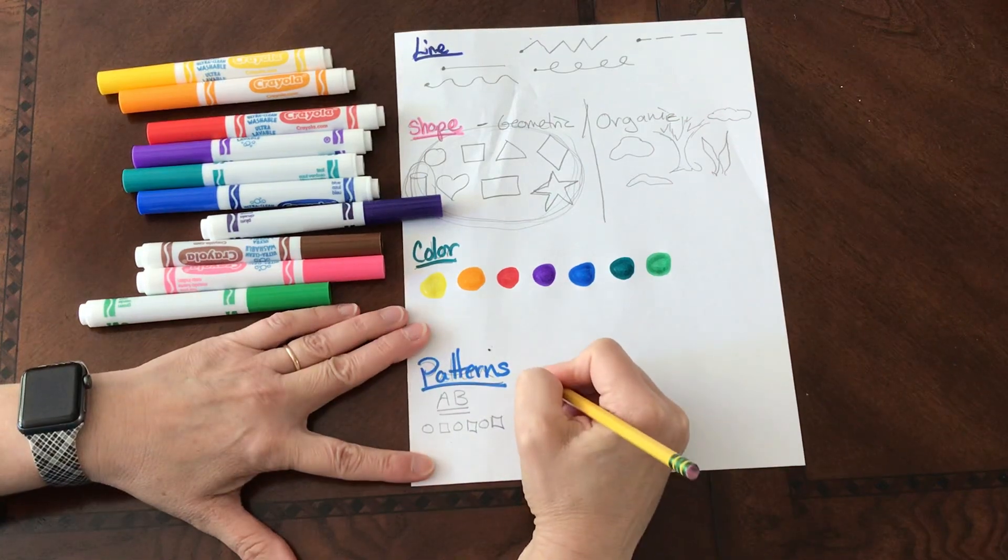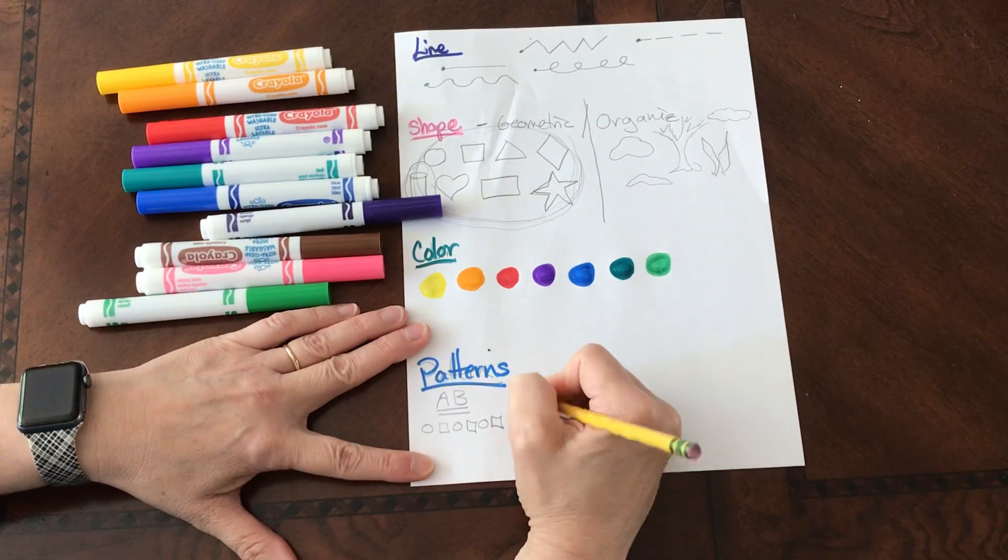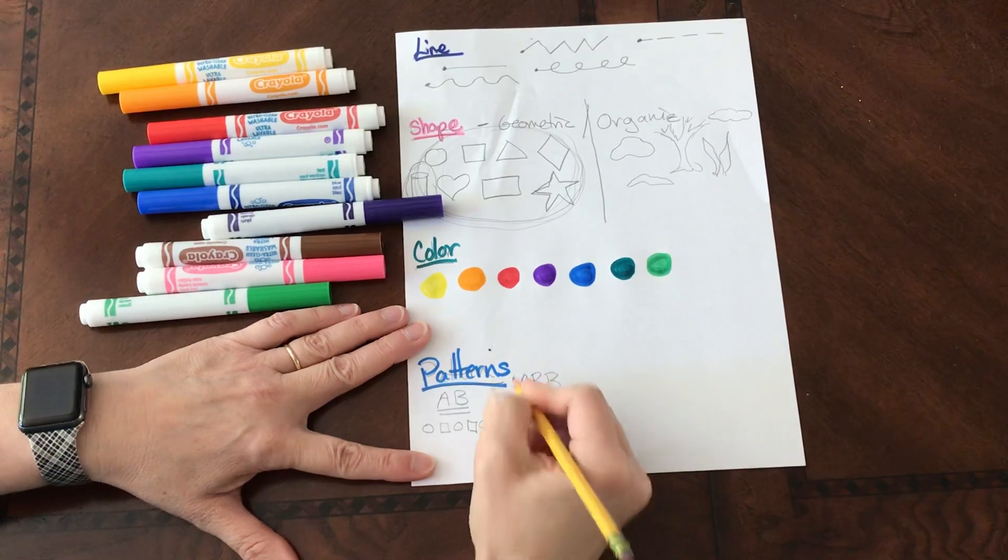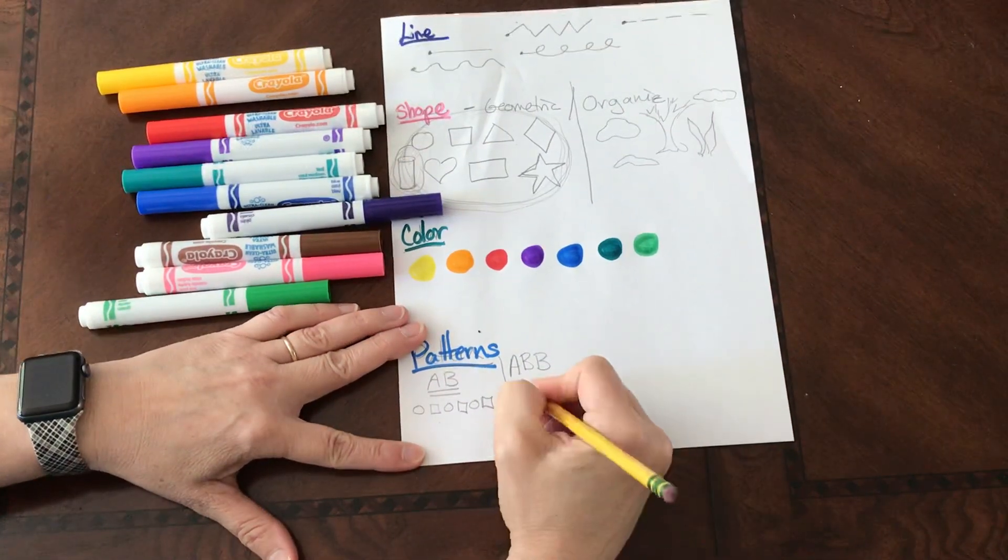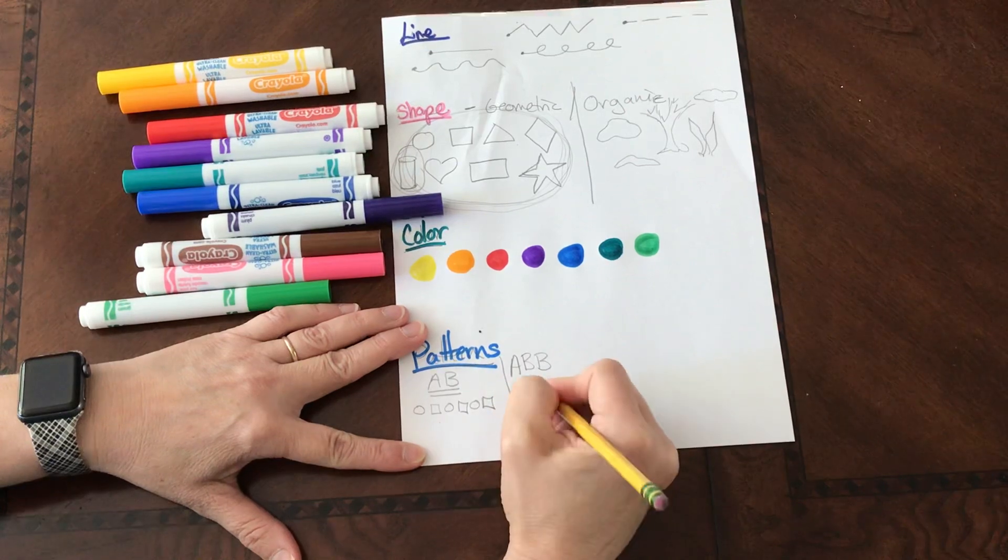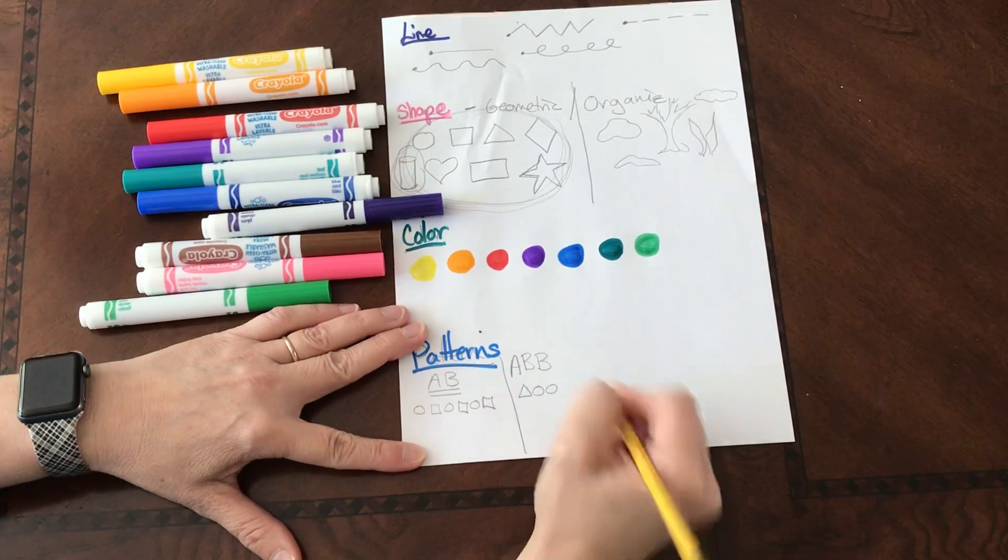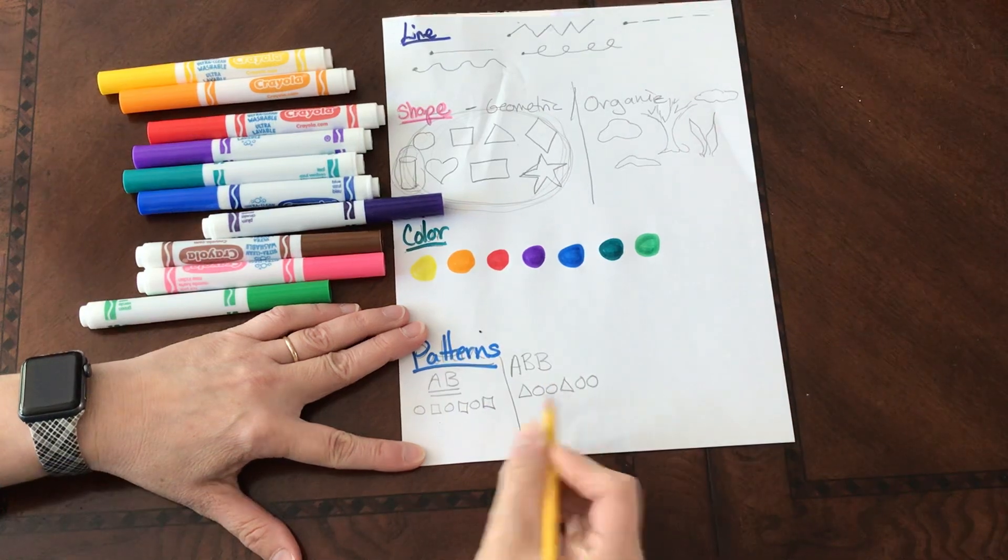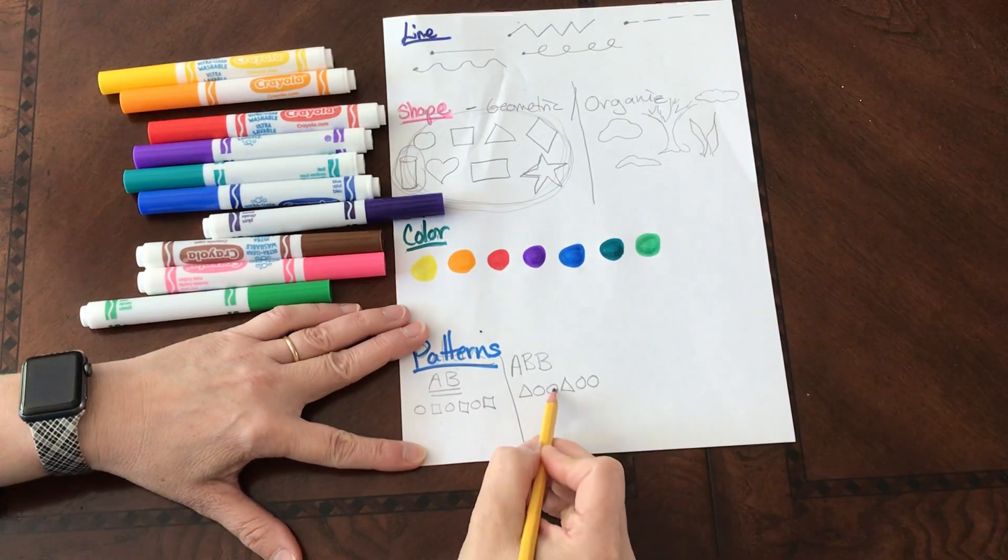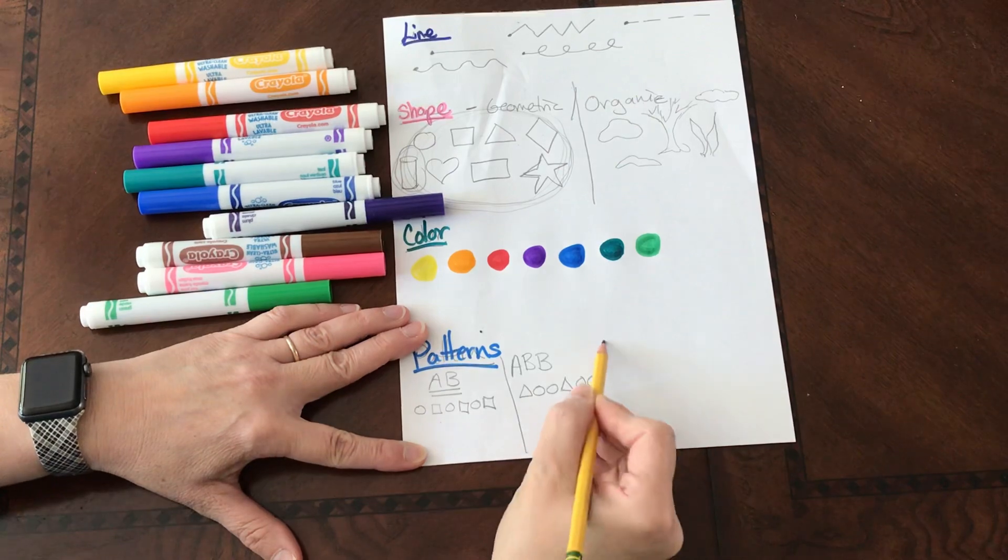We might have a pattern that is an A-B-B pattern. Well, what would that look like? Let's do something different. Triangle, circle, circle. Triangle, circle, circle. That would be an A-B-B pattern.